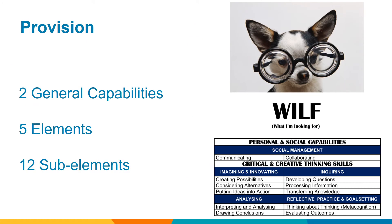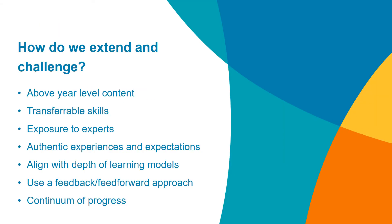Working under the Western Australian curriculum, we focus on two of the general capabilities: critical and creative thinking, and personal and social capabilities. Within these, there are five elements and 12 sub-elements. Coming up with ideas, developing critical research skills through inquiry, goal setting and reflection are key skills practised and developed in each course. We extend and challenge our students in a variety of ways, including exposure to above-level learning content and experts in the field. We consider each PIAC student to be on their own individual journey and use a feedback and feed-forward approach to foster individual progress and growth.